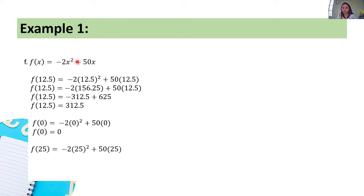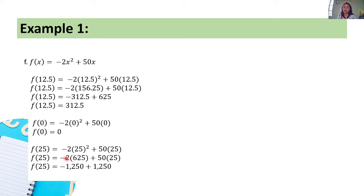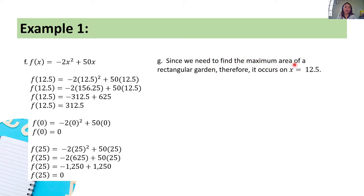For x = 25: f(25) = -2(25)² + 50(25) = -2(625) + 1250 = -1250 + 1250 = 0. Since we need to find the maximum area, the maximum occurs at x = 12.5, where f(12.5) = 312.5 — the largest computed value.